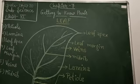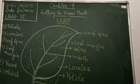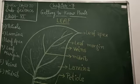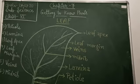Good morning students. Today we will discuss about the leaf. Leaf is a flattened green colored structure which arises from the nodes of a stem or its branches. The green color of leaves is due to the presence of a green pigment called chlorophyll. Leaves are of different shapes, size, thickness and have different growth patterns.